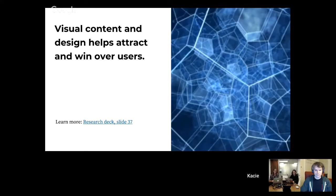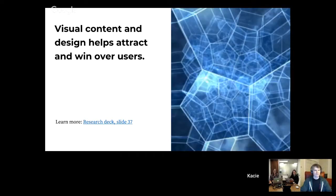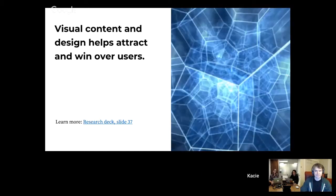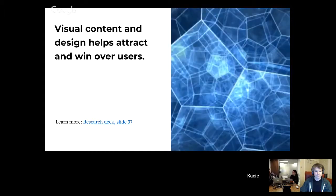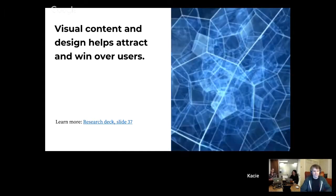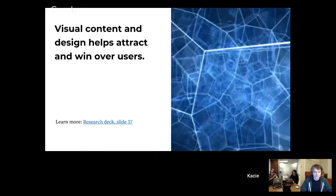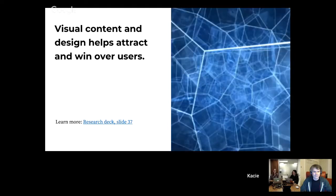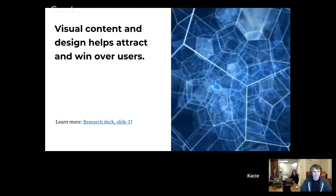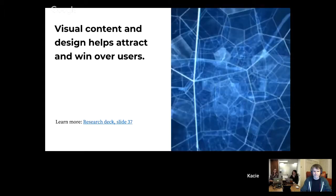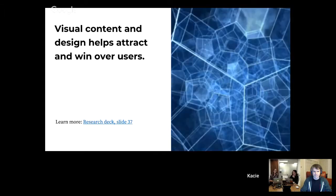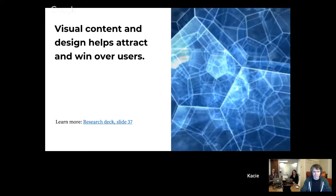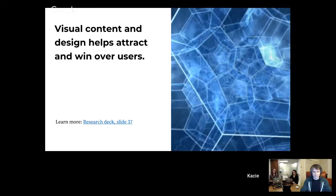Visual content and design helps attract and win over new users. This is important for people who are planning social media campaigns — what kind of content do people really like to see? It also matters for what kind of content could be on Wikipedia to make it more popular where you live. Are there videos that could be added to articles, or other ways to make Wikipedia more appealing?